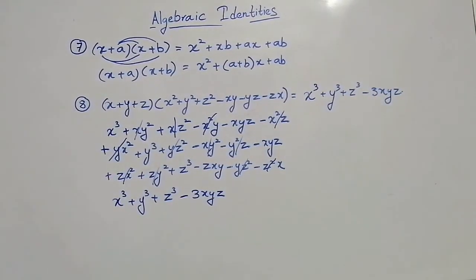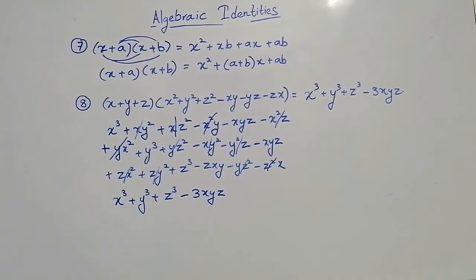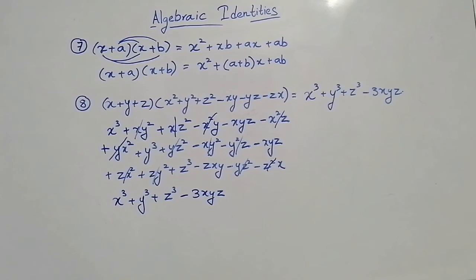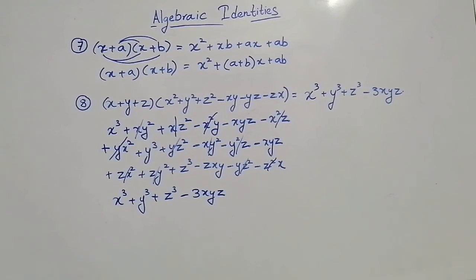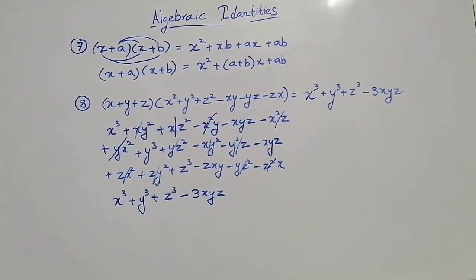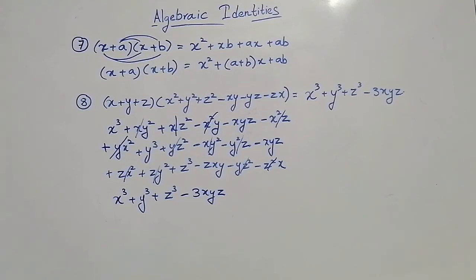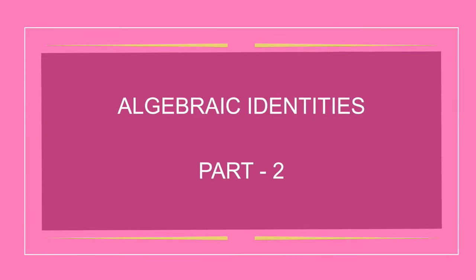Okay students. So in this way we can derive all the formulas — all the algebraic identities. The main property we applied here is the distributive property. We have to know the distributive property for obtaining all these algebraic identities. This is all about deriving algebraic identities, students. If you really understand these derivations, please share and subscribe. Thank you for watching my video. Thank you.